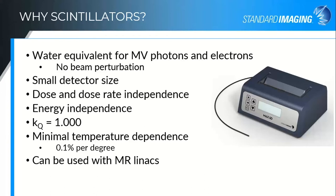That's the proof in the pudding that it's really not changing those interactions at the point of measurement compared with what would have happened in water. There is a small temperature dependence that has been seen over a large range of temperatures — about a tenth of a percent per degree. As long as you're at or near room temperature doing QA measurements, it really doesn't affect your data, so you don't have to correct for that.